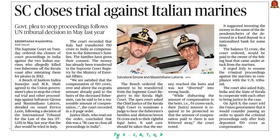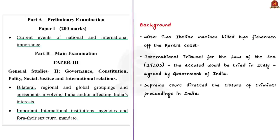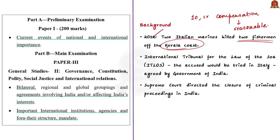The first article for today's discussion is 'Supreme Court closes trial against Italian marines.' Recently, the Supreme Court directed the closure of criminal proceedings in India against two Italian marines. They were accused of killing two fishermen off the Kerala coast in February 2012. The top court also termed the rupee 10 crore compensation paid by the Republic of Italy as reasonable and adequate. The International Tribunal for the Law of Sea ruled that the accused would be tried only in Italy. Based on this, the Centre filed a plea in the Apex Court to stop the criminal trial. In this context, let us discuss briefly about the United Nations Convention on the Law of Sea.